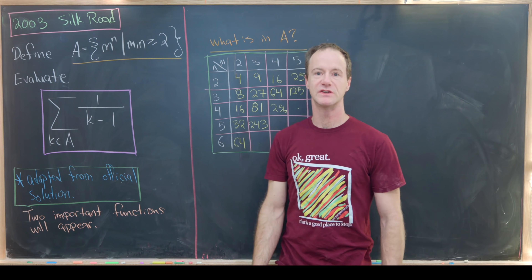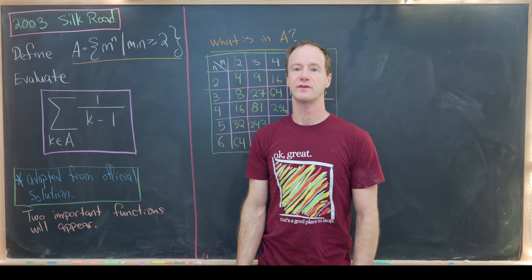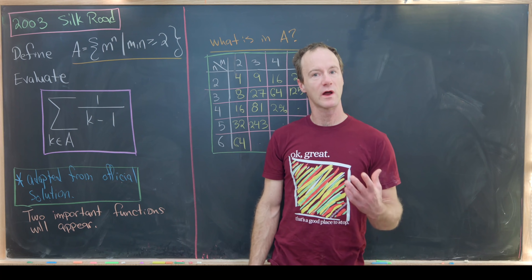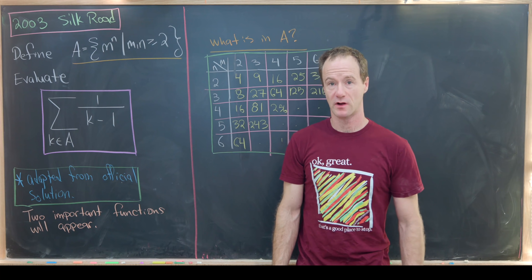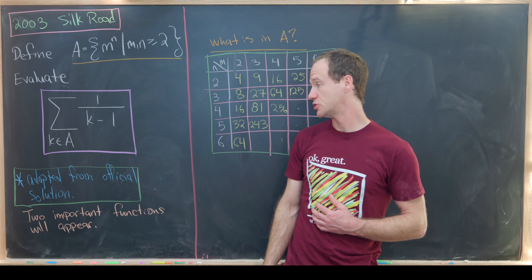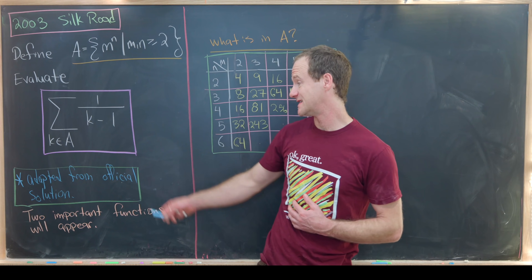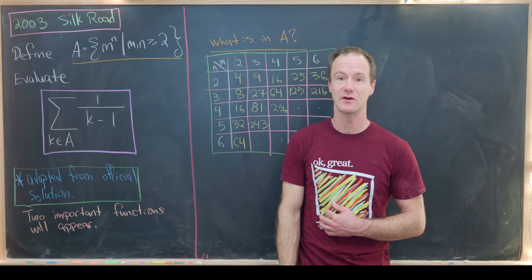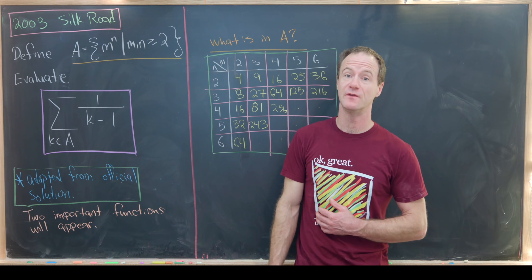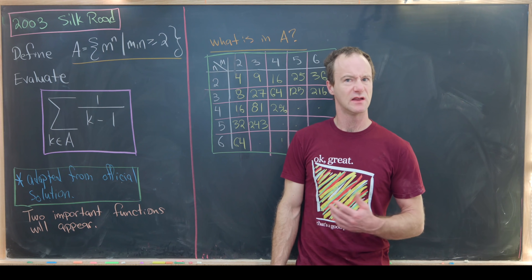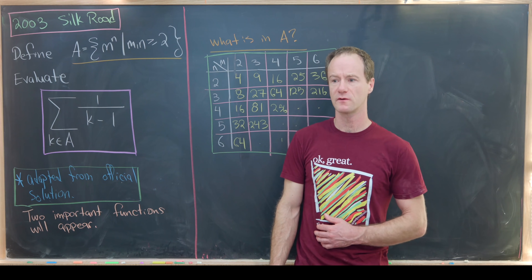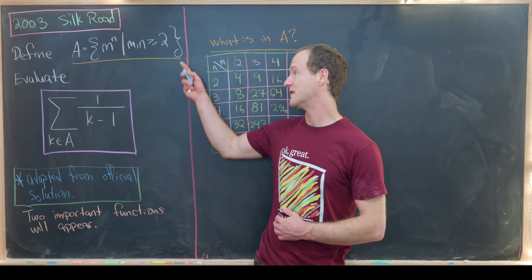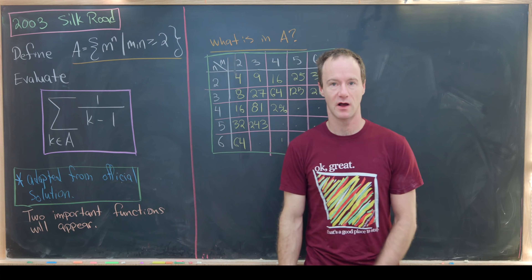Here I've got a nice problem from the 2003 Silk Road Math Olympiad, and what I like about this problem is that in our solution, which is adapted from the official solution, we will see the appearance of two very important functions. These two important functions do not clearly appear by the statement of the problem.